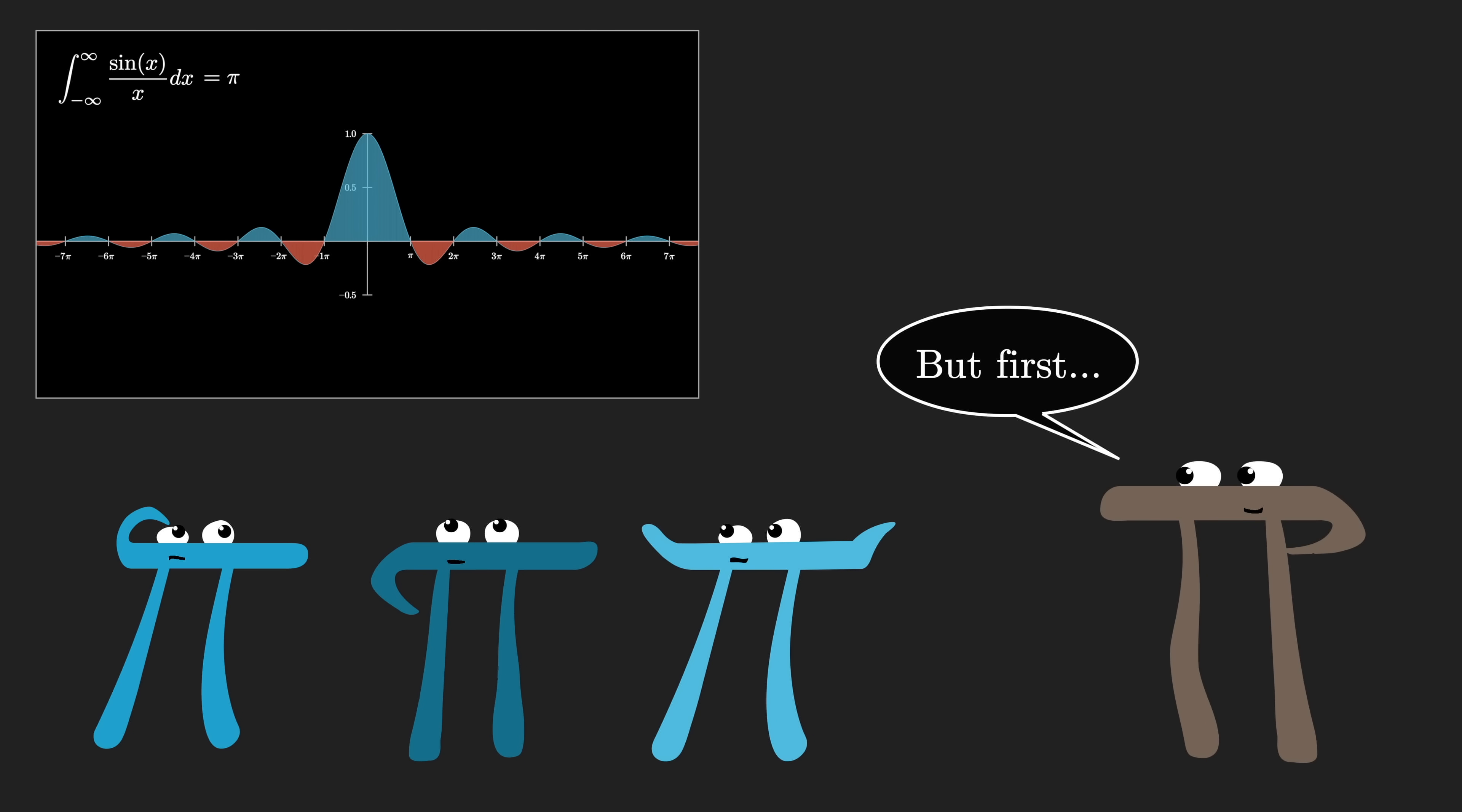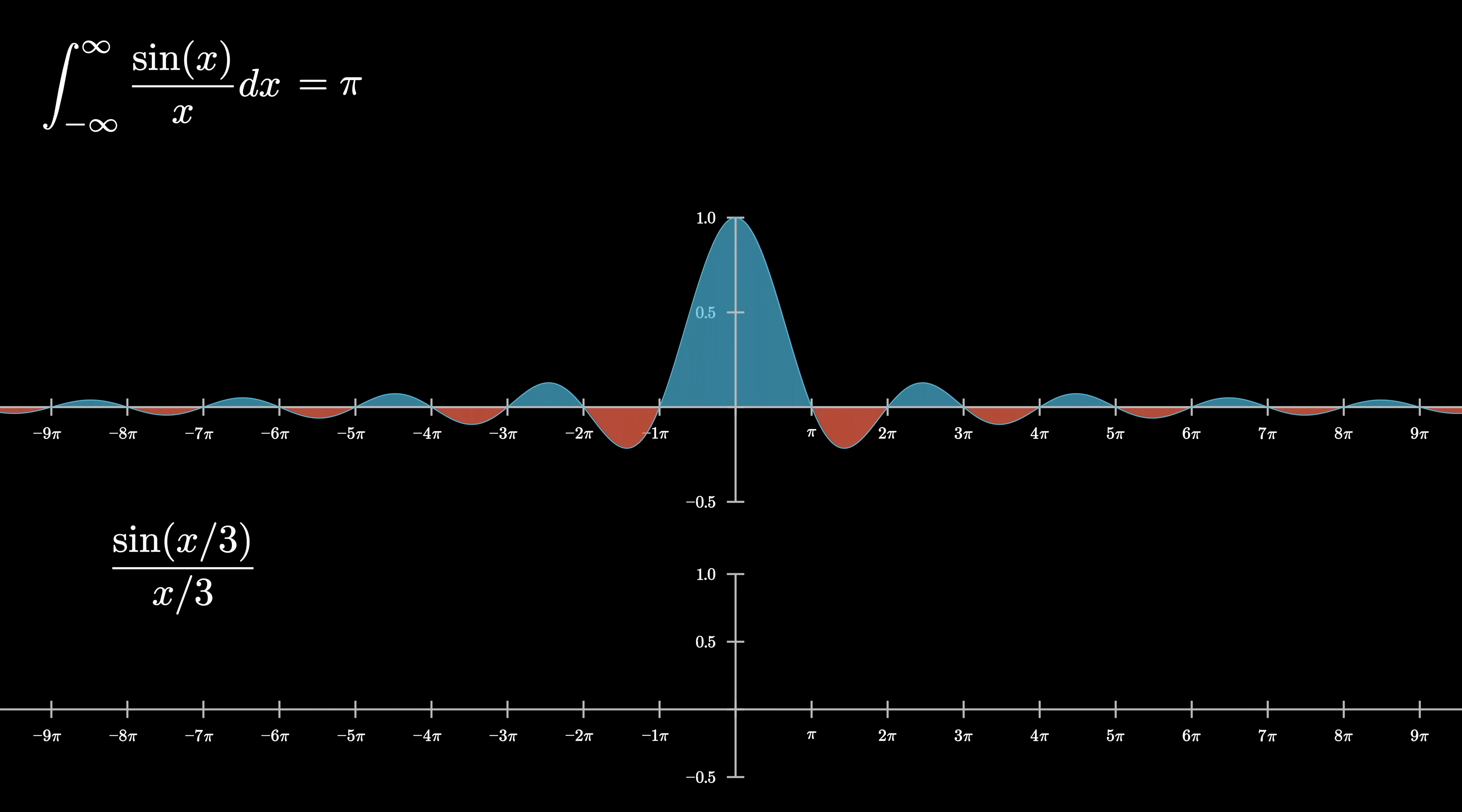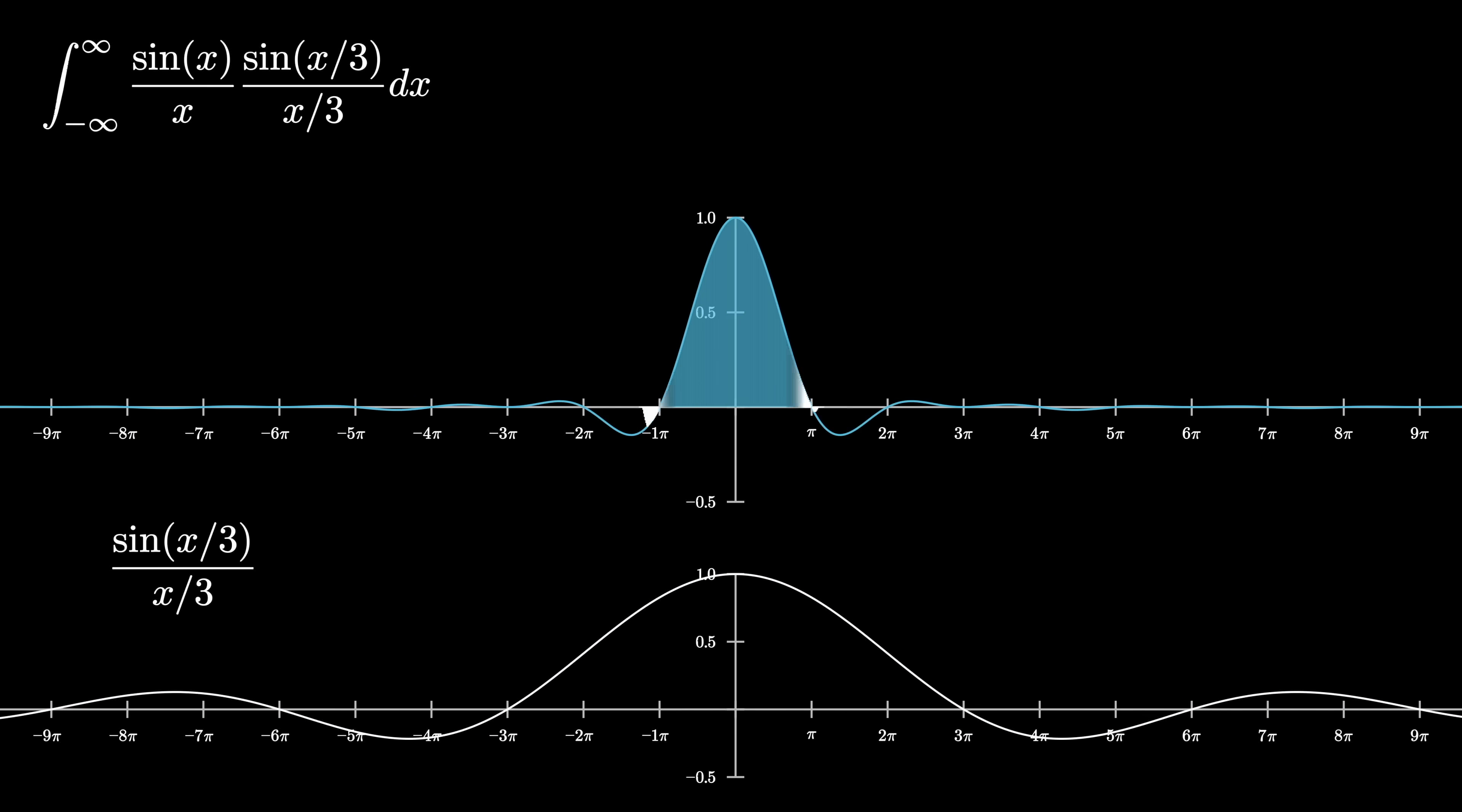Progressing on with the sequence I opened with, the next step is to take a copy of this sinc function, where you plug in x divided by three, which will basically look like the same graph, but stretched out horizontally by a factor of three. When we multiply these two functions together, we get a much more complicated wave, whose mass seems to be more concentrated towards the middle.